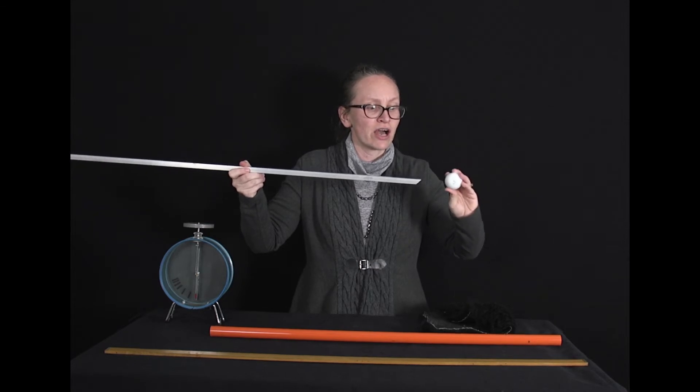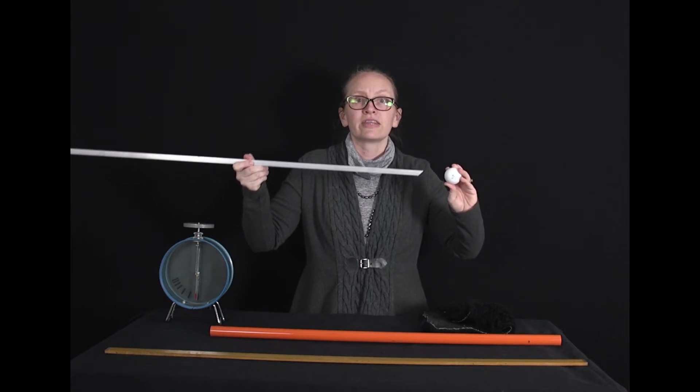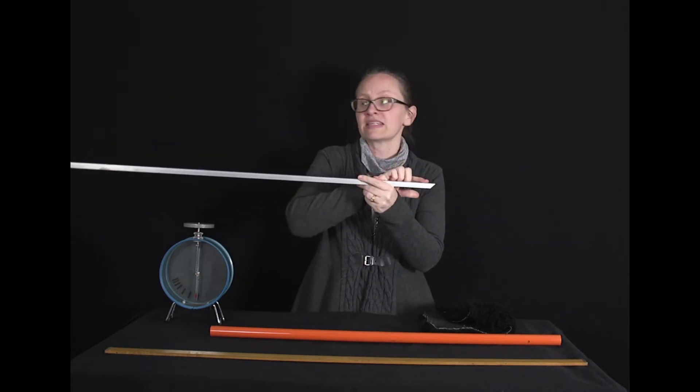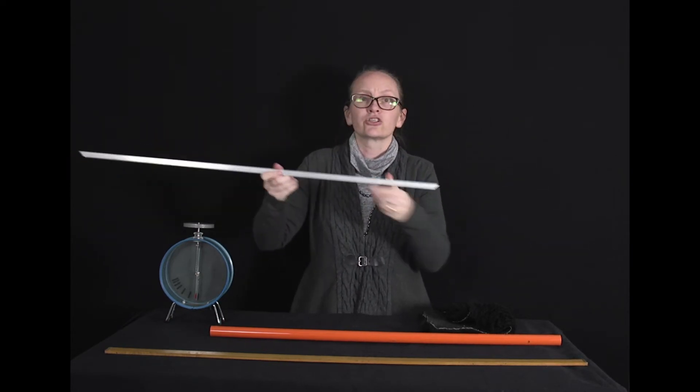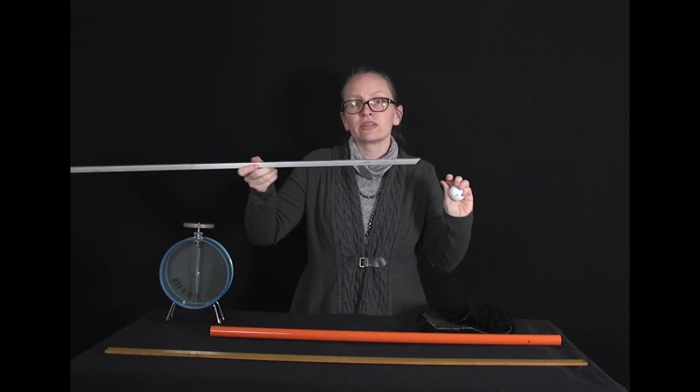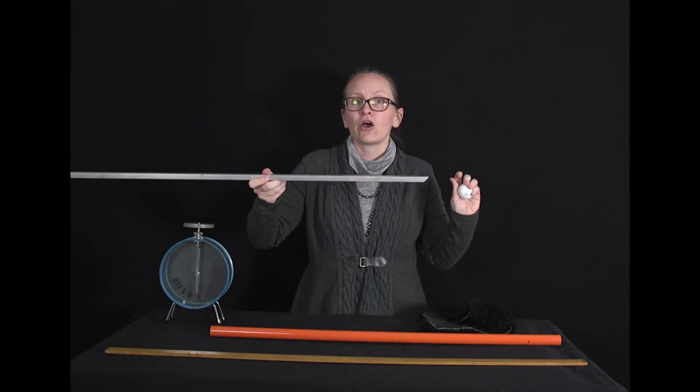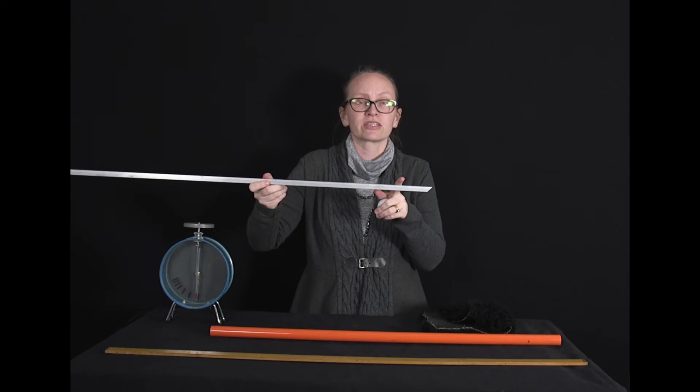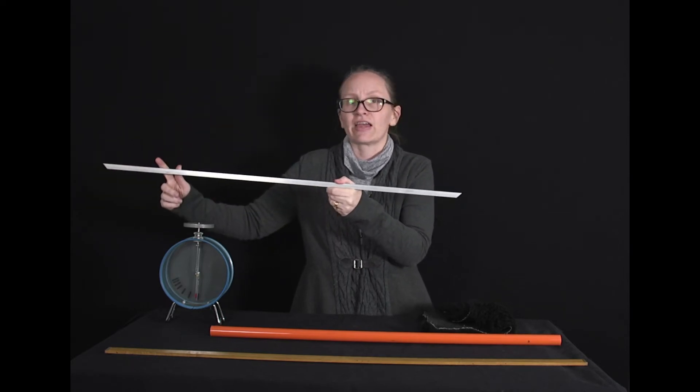the negative charge is going to repel the electrons inside the conductor. So the electrons will actually move from this end down this end to try and get away from this negative charge here. So this conducting metal rod overall is still neutral, but it does have a charge distribution with a positive end and a negative end.